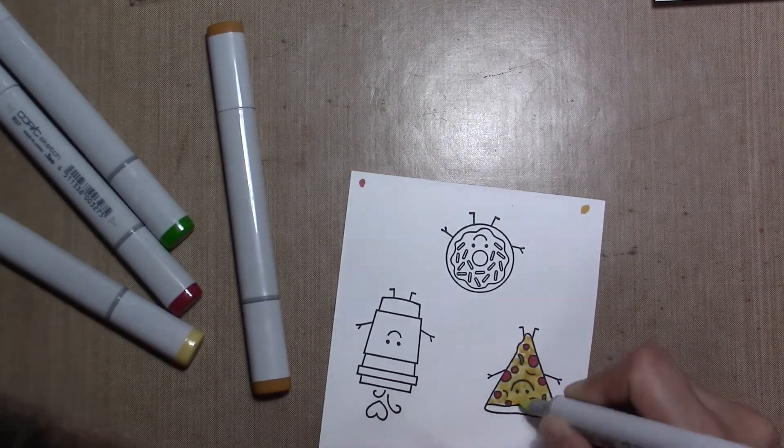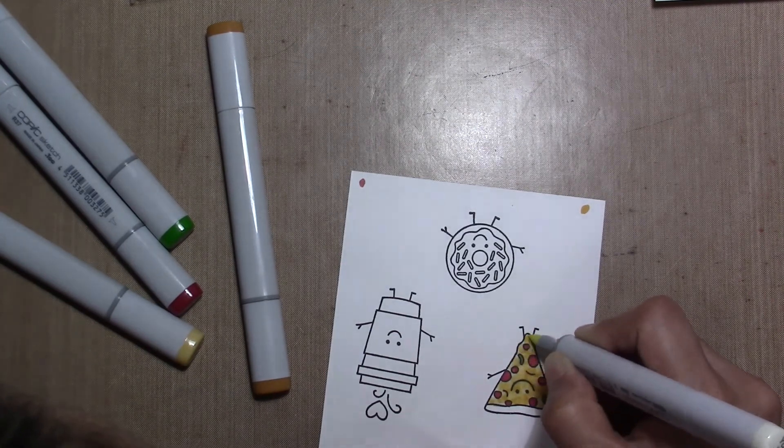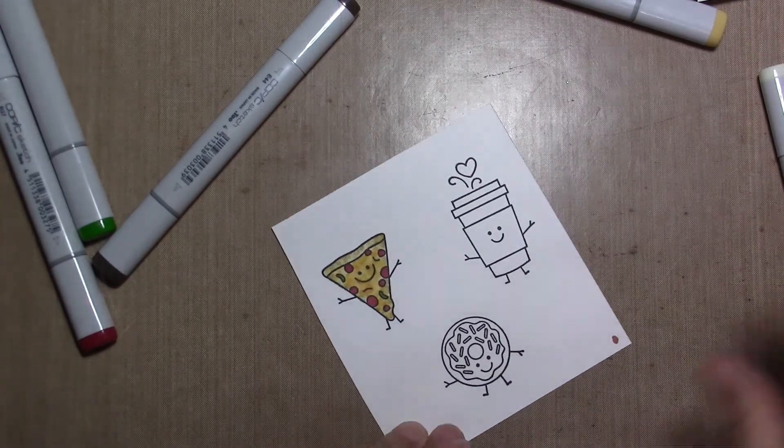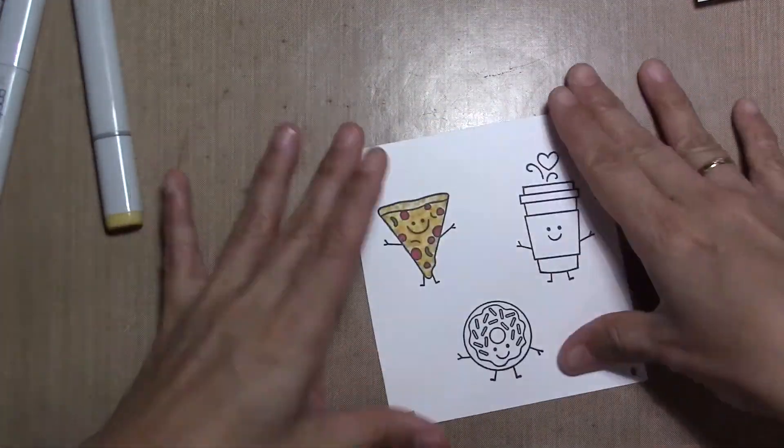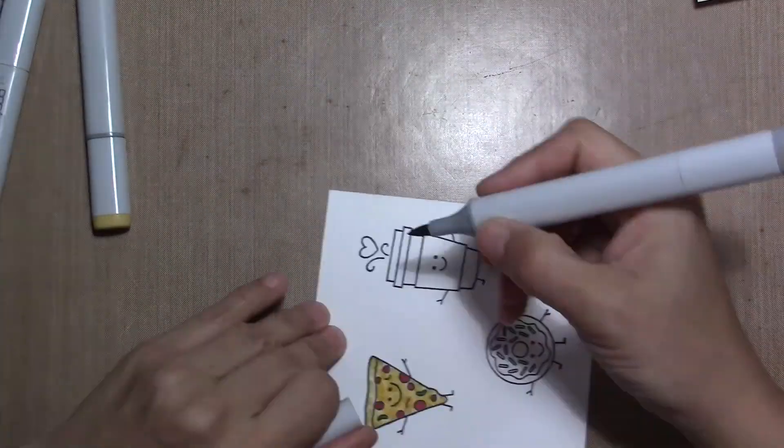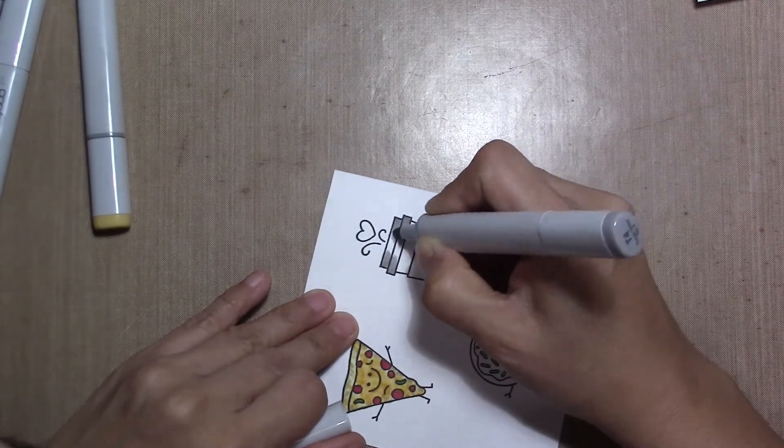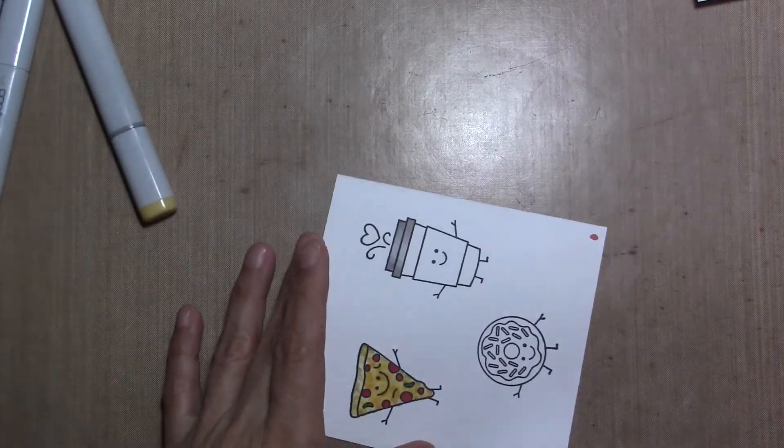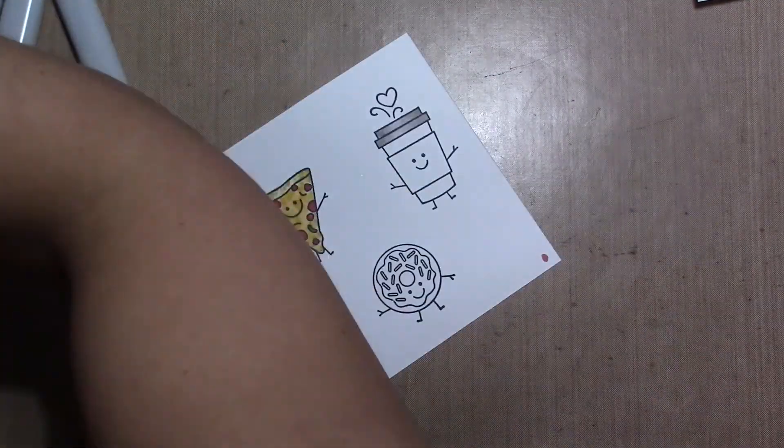After I finish coloring this image, I die-cut them with the die-cuts that come in the stamp set. This stamp set is from Taylored Expressions and it comes with the stamps and the die-cuts.